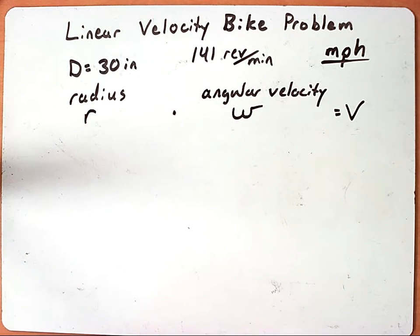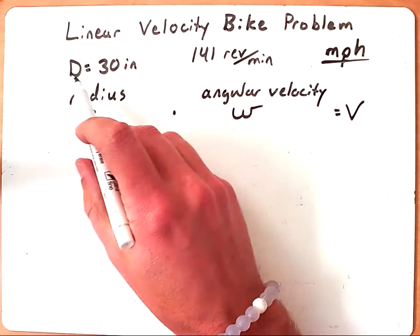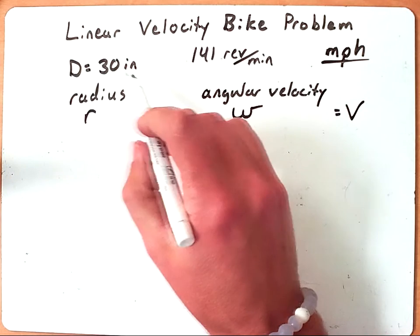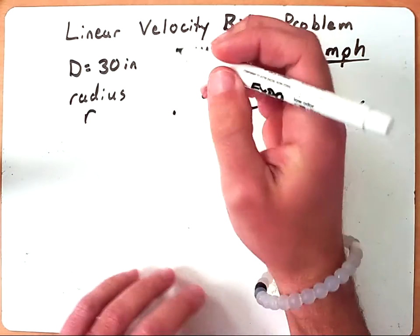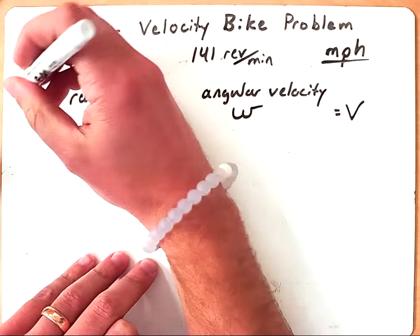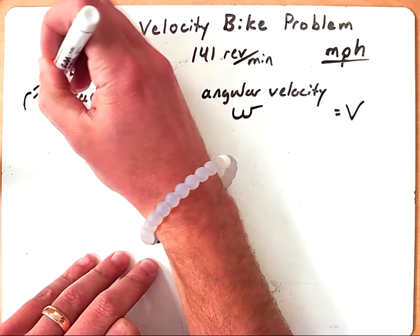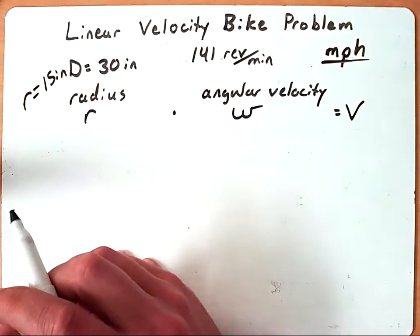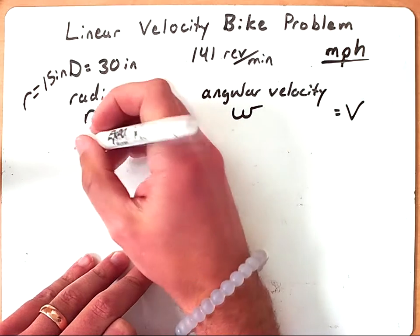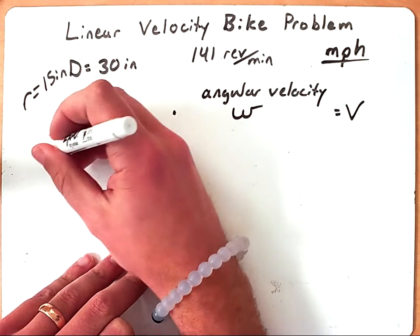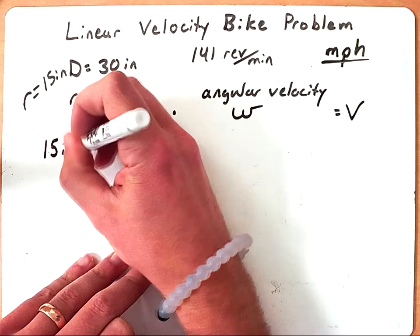Okay, so let's look at the information given. We are given that the diameter equals 30 inches, so we know that we can half that, and that will give us a radius of 15 inches. So I can take that and plug that in for r, so I have 15 inches.